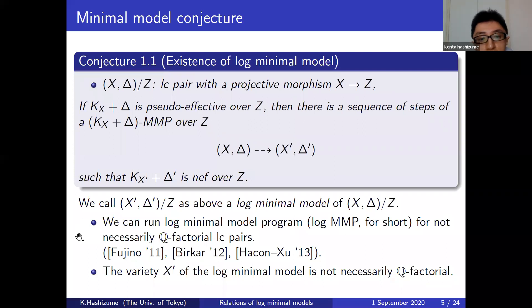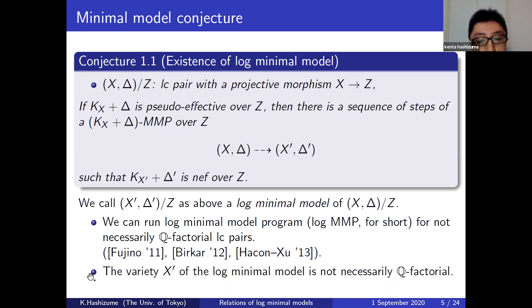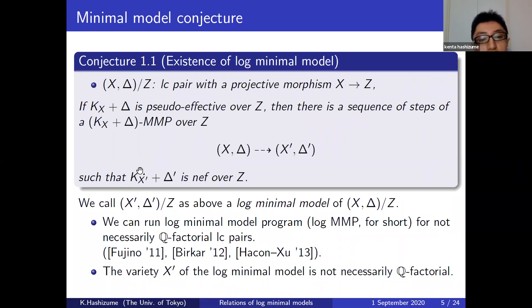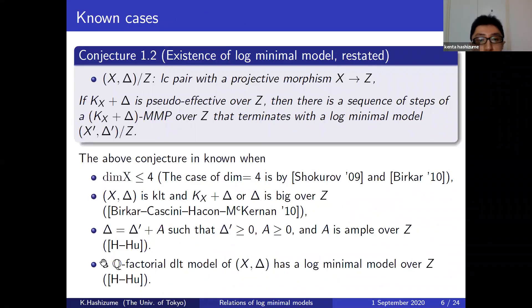The structure of steps of non-Q-factorial log-MMP is complicated. When X is Q-factorial, it is known that the log-minimal model X' is also Q-factorial — this follows from the construction of log-MMP. But when X is not Q-factorial, we don't know whether X' is Q-factorial or not. So in this talk, we don't assume that a log-minimal model is Q-factorial.